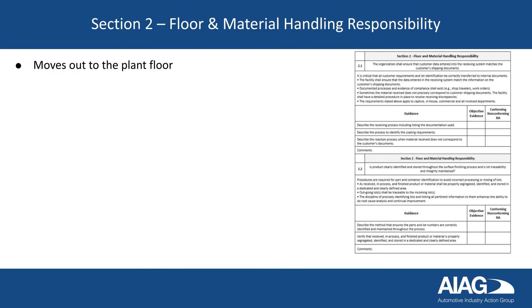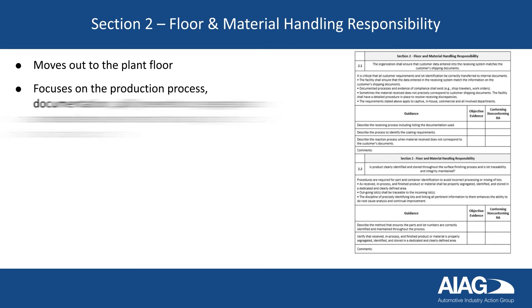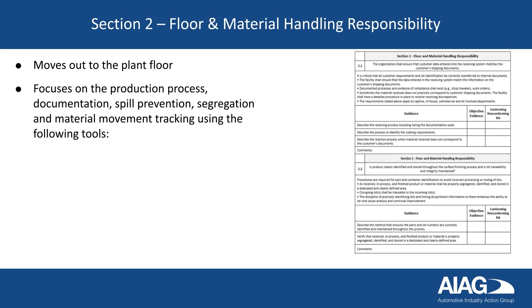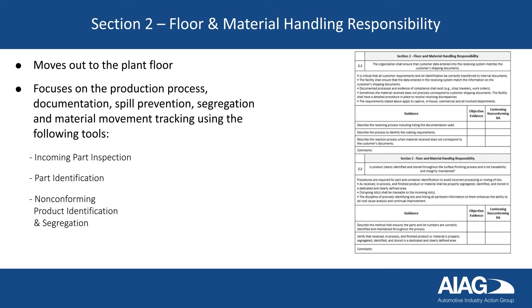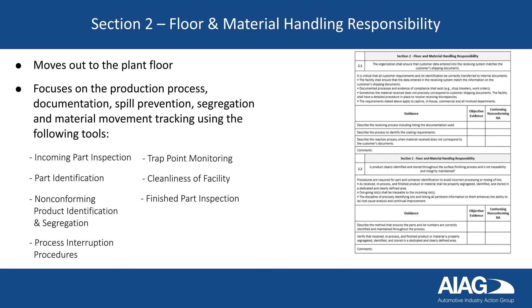Section 2 moves out to the plant floor. It focuses on the production process, documentation, spill prevention, segregation, and material movement tracking using the following tools: incoming part inspection, part identification, non-conforming product identification and segregation, process interruption procedures, trap point monitoring, cleanliness of the facility, and finished part inspection.